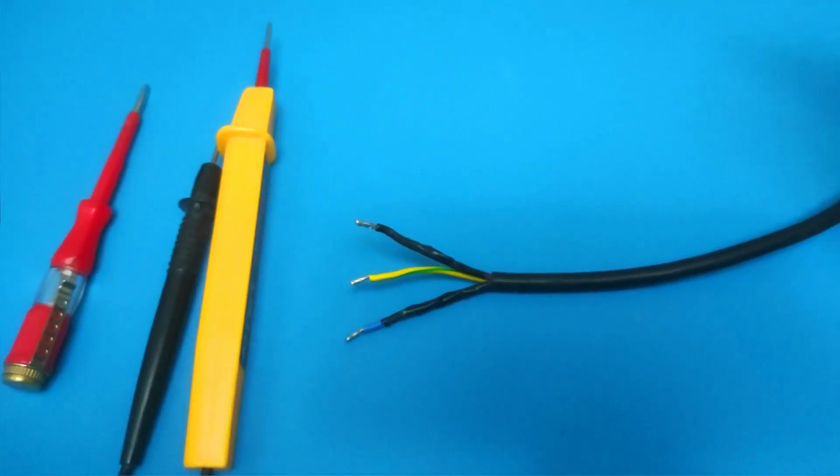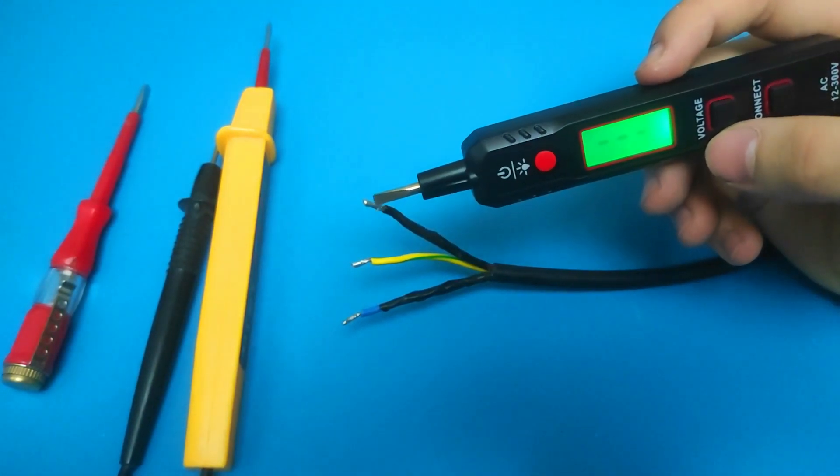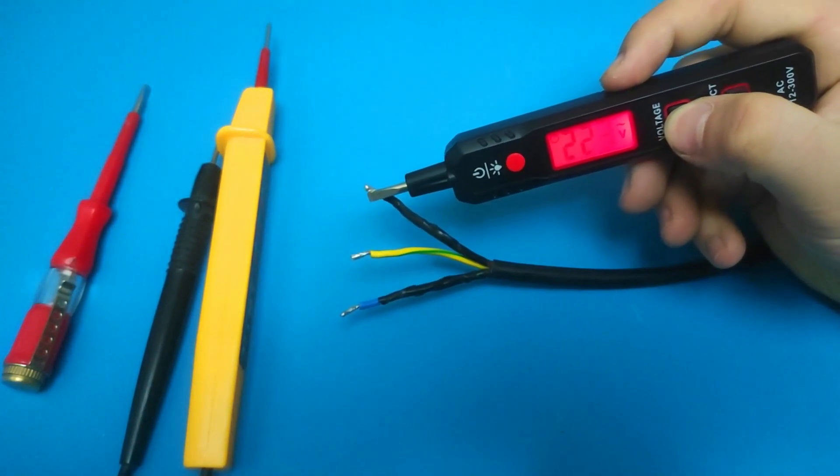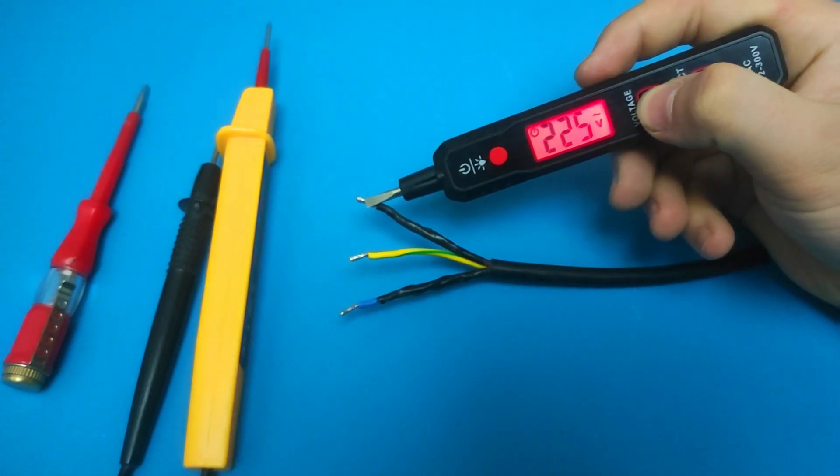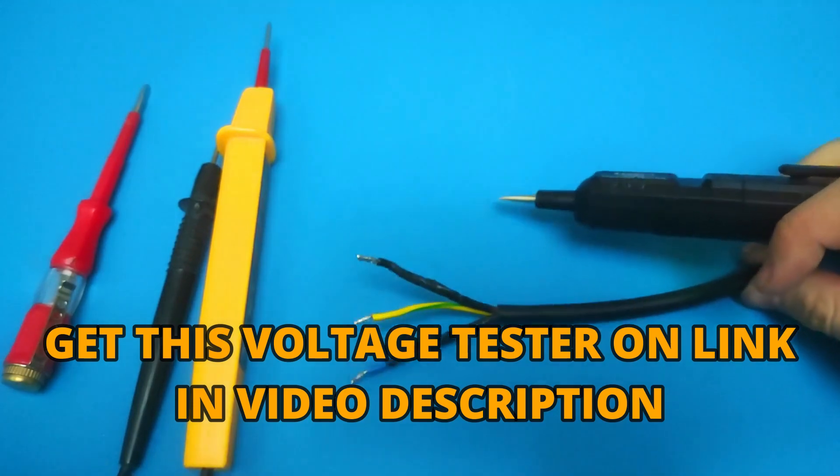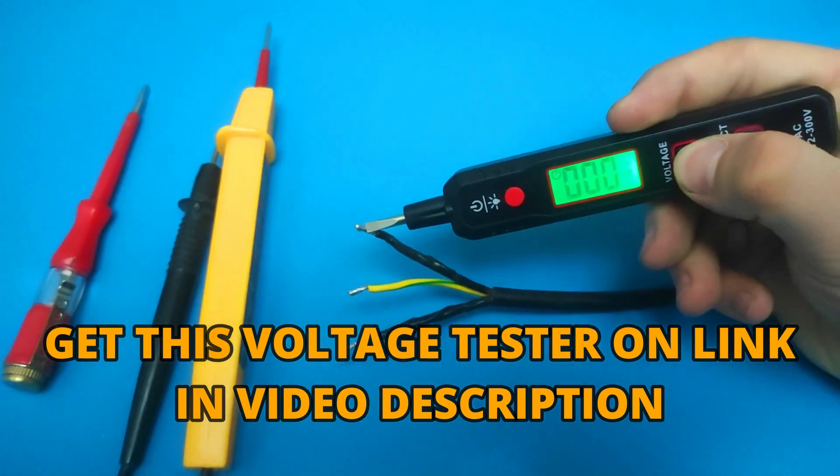The KWITS voltage tester has far more benefits than these other types of testers. It shows the voltage very well and accurately. You can get this tester from the link in the video description.